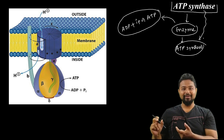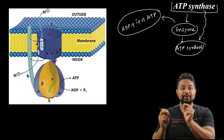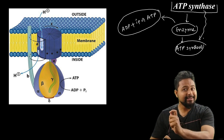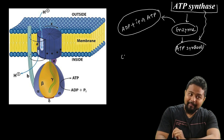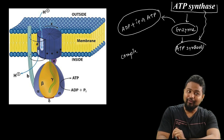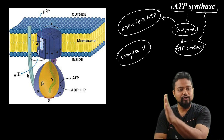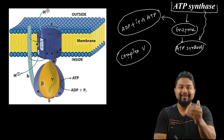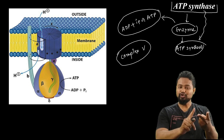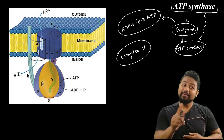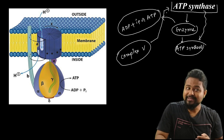ATP synthase is located in the mitochondrial inner membrane, which is the site of the electron transport chain. This enzyme is known as Complex 5, because it is part of the electron transport chain complexes: Complex 1, Complex 2, Complex 3, Complex 4, and Complex 5, which is called ATP synthase.